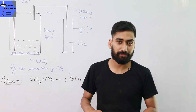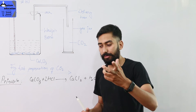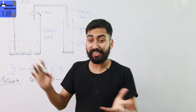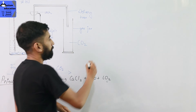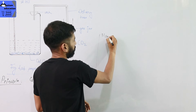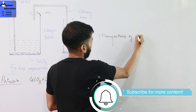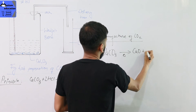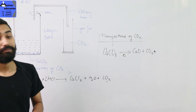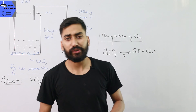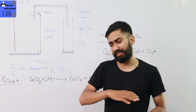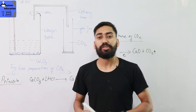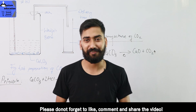This is how to prepare carbon dioxide. There are also general methods and the industrial method of preparation. In the industrial method, calcium carbonate is heated strongly to produce calcium oxide and carbon dioxide. The next video will cover the chemical properties of carbon dioxide. Please like, subscribe, and hit the bell. Stay home, stay safe, and see you in the next video. Goodbye.